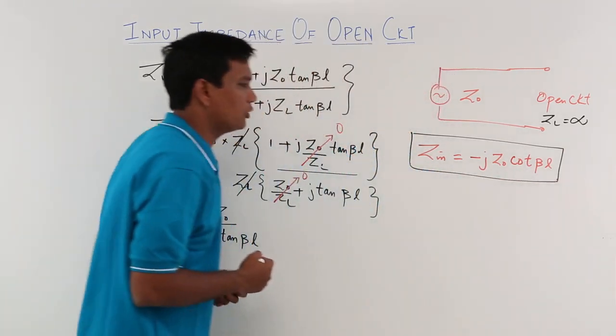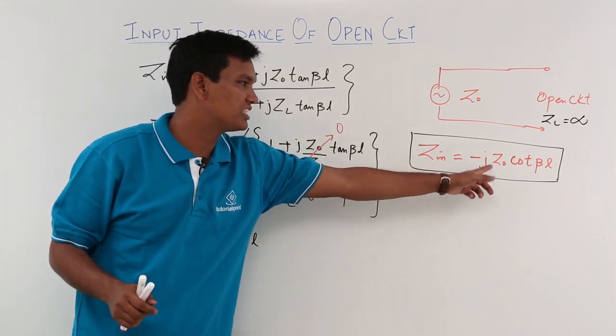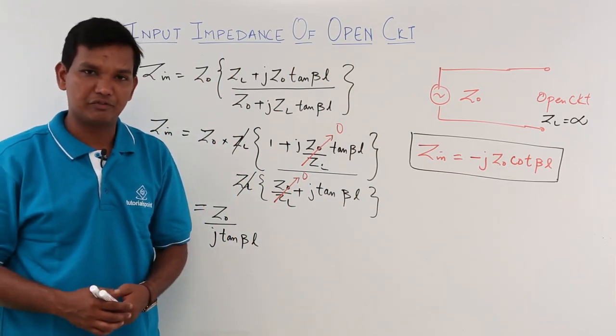So we have found out what would be the input impedance in case of an open circuit which comes out to be minus J Z naught cot beta L. We will see more on this in the next videos.